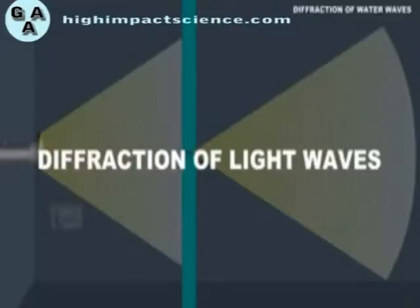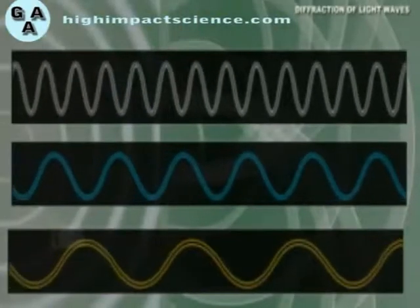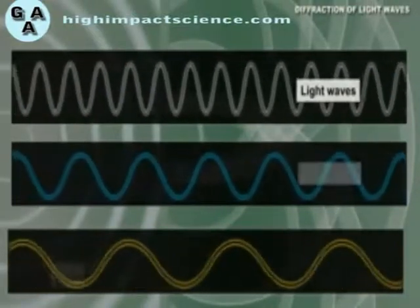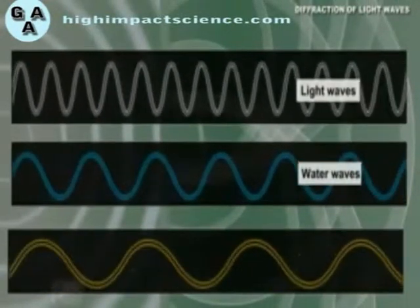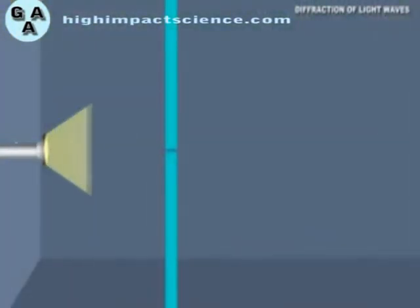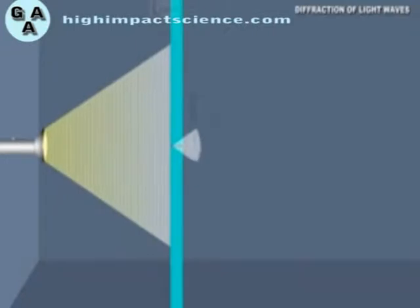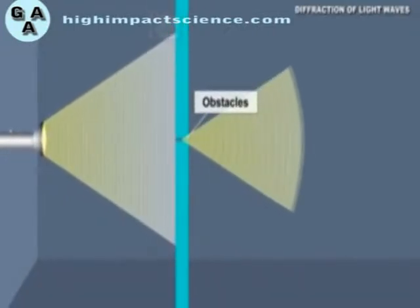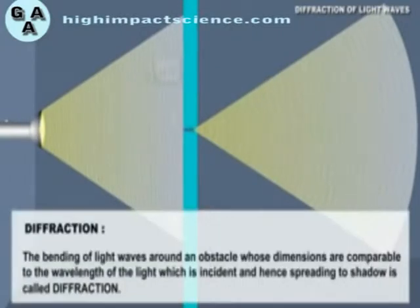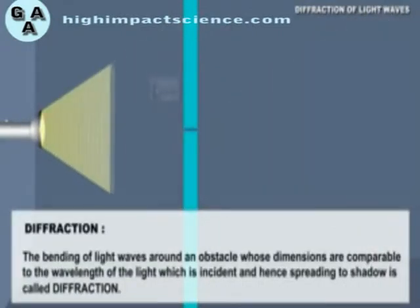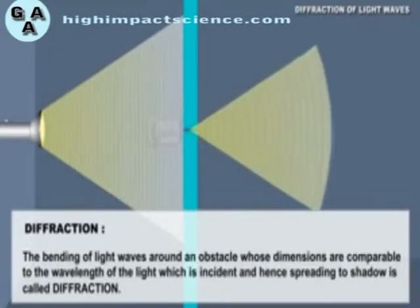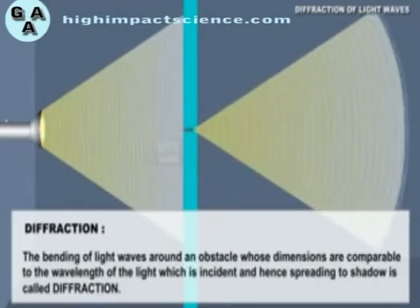How about light waves? The wavelengths of light waves are very small compared to those of water or sound waves. Therefore, diffraction of light requires very small apertures. The bending of light waves around obstacles whose dimensions are comparable to the wavelength of the incident light, and hence spreading into the shadow, is called diffraction.